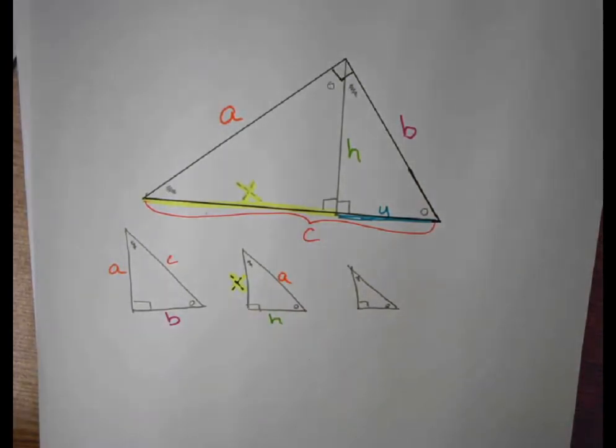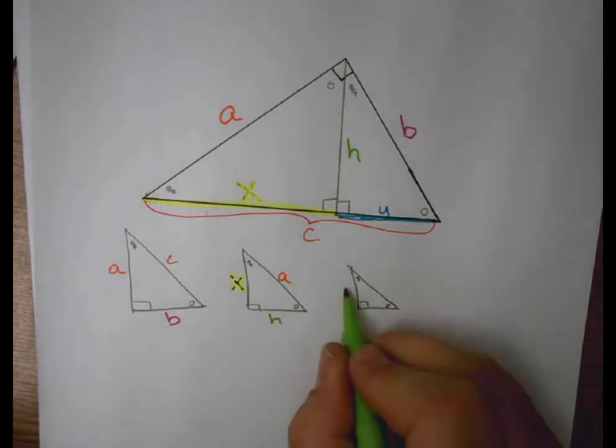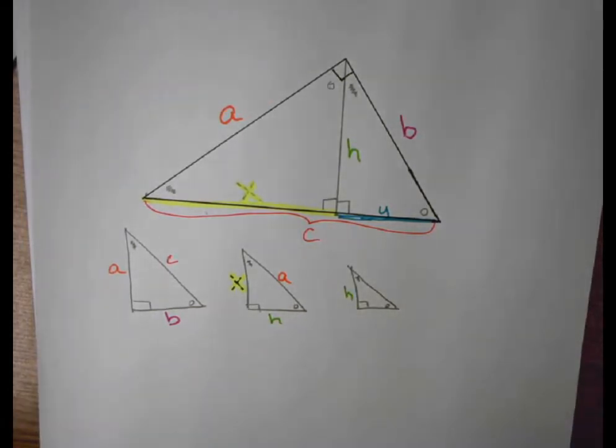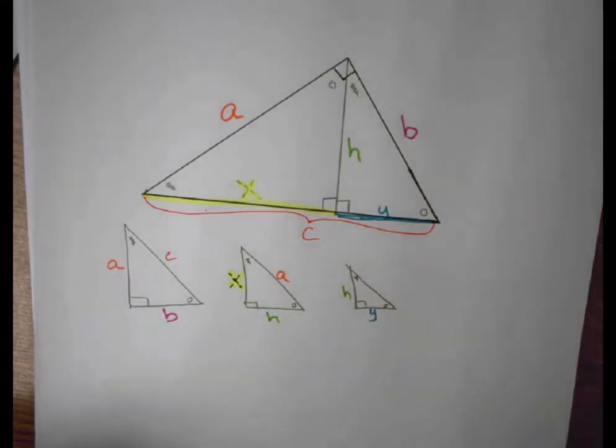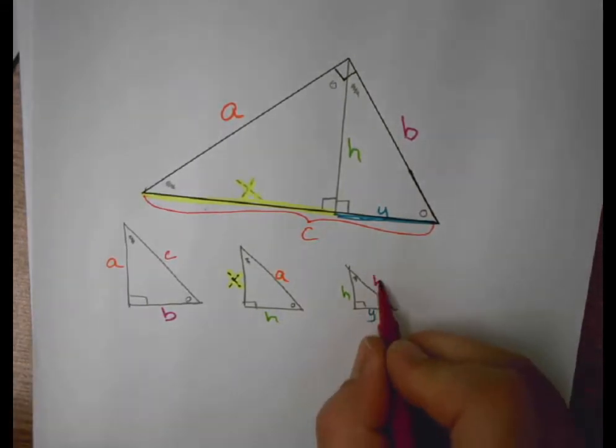And the hypotenuse this time is A. And then for the smallest triangle, side opposite circle is H, side opposite squiggly is Y, and B is the hypotenuse.